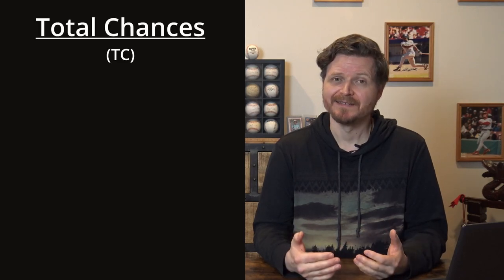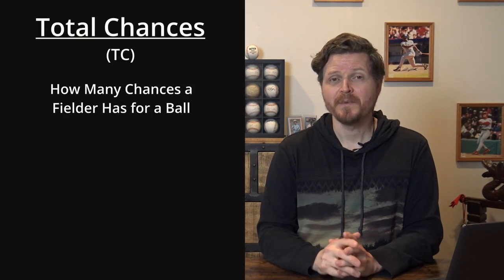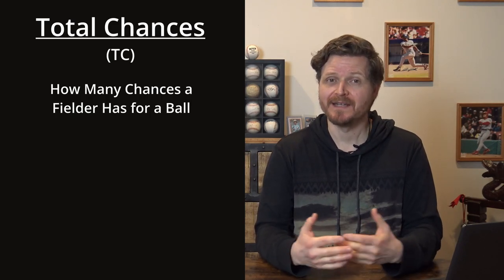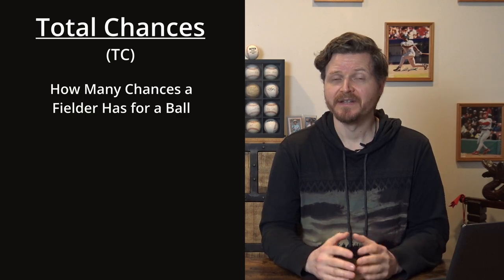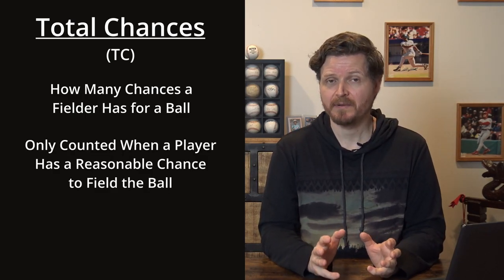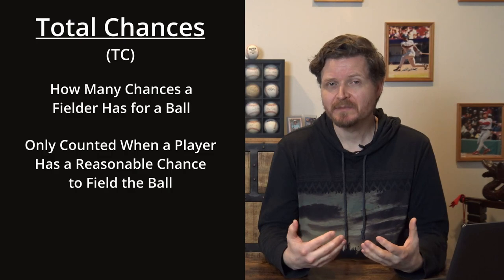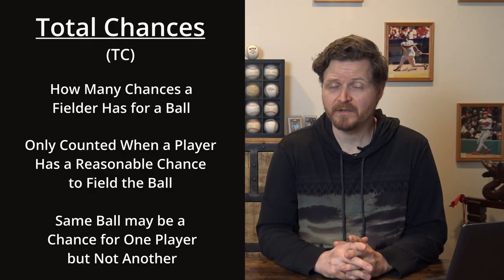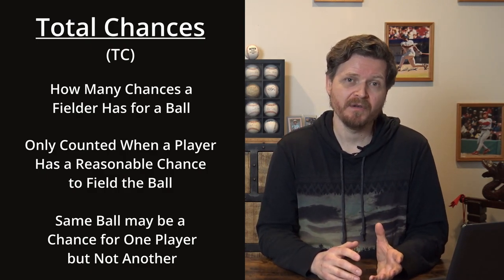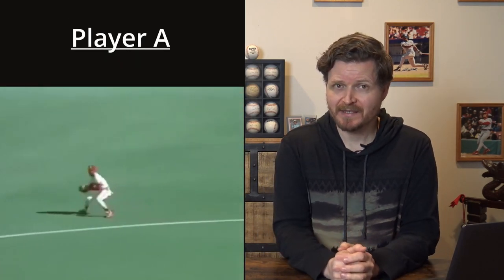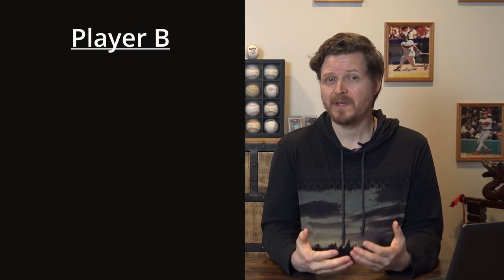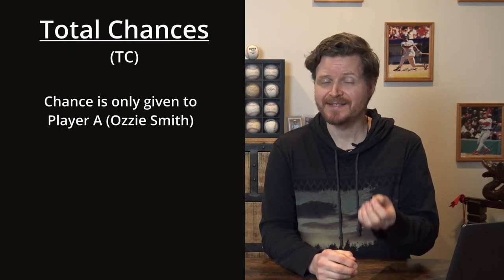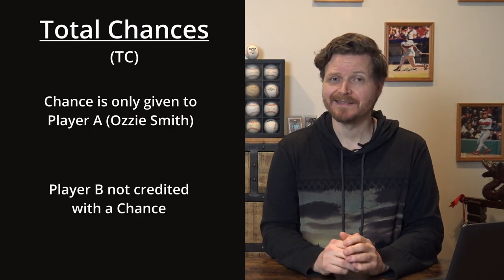The next stat is chances — simply how many chances a player had to field a ball hit into his general area. A chance is only counted when a ball is hit to the player's area and he has a reasonably good chance of fielding it. For example, Ozzie Smith might reach a ball because he's faster or has better reaction time, whereas another player may not — so only Ozzie is given a chance.